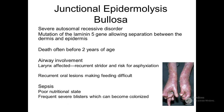The second subtype is junctional epidermolysis bullosa, due to autosomal recessive gene defects. The mutation is in the gene named laminin-5, leading to separation between the dermis and epidermis. This gene is responsible for the proper development of laminin-5, which is in charge of proper attachment between the epidermis and the dermis. Usually, death happens before the second birthday of the baby.